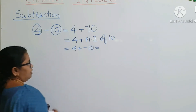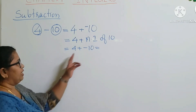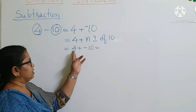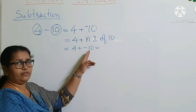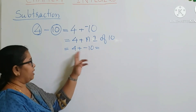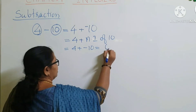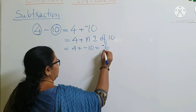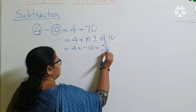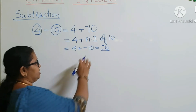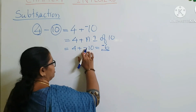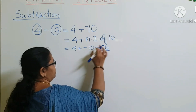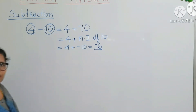Now we apply the addition rules. We have a positive integer 4 and a negative integer minus 10. So we subtract them: 10 minus 4 is 6. The greater number is 10, and the sign of the bigger integer is negative. So the answer is negative 6.